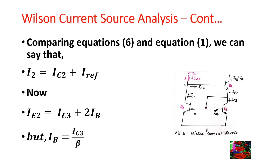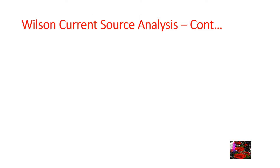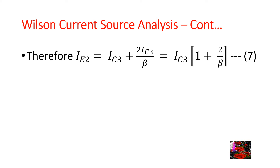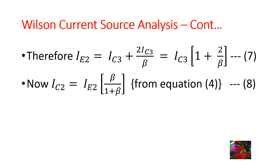Now, I_E2 = I_C3 + 2·I_B. But I_B = I_C3/β. Therefore, I_E2 = I_C3 · (1 + 2/β). Consider this as equation 7. Now, I_C2 = I_E2 · β/(1+β), from equation 4. Consider this as equation 8.